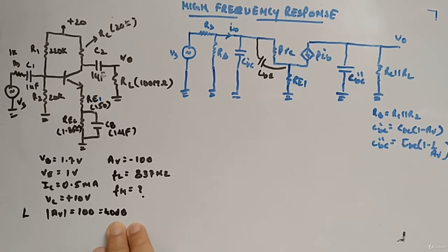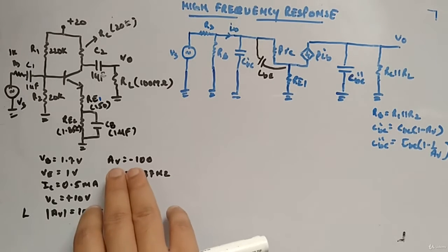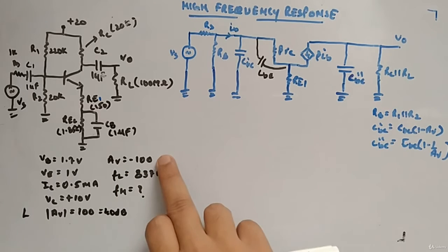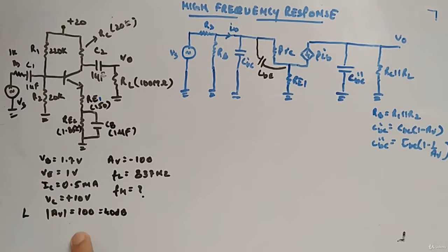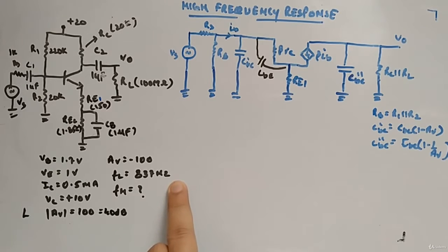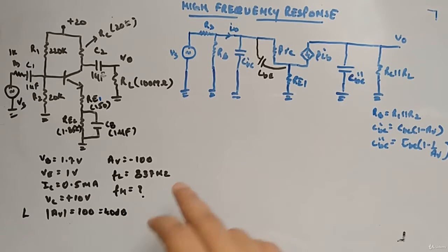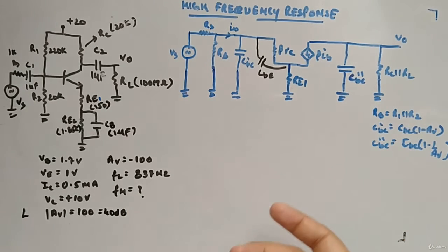The midband gain magnitude is 100, which is 40 dB. The low-frequency cutoff fLB was calculated as 837 Hz. Now we need to calculate fH, the high-frequency cutoff.